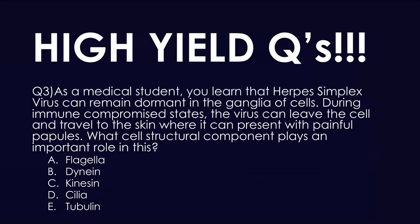Question three: as a medical student, you learned herpes simplex virus can remain dormant in the ganglia of cells. During immunocompromised states, the virus can leave the cell and travel to the skin where it presents with painful papules. What cell structural component plays an important role in this? The answer is C: kinesin. You don't need to know about herpes specifically — just the function of microtubule motor proteins. Dynein goes toward the cell body; kinesin moves away from it, helping HSV travel toward the periphery.